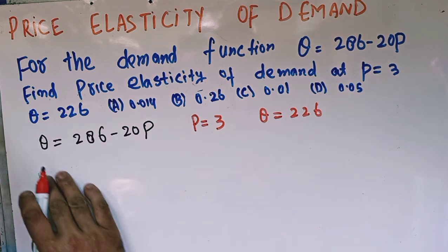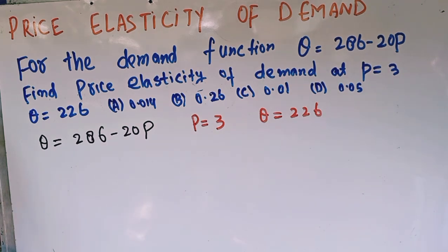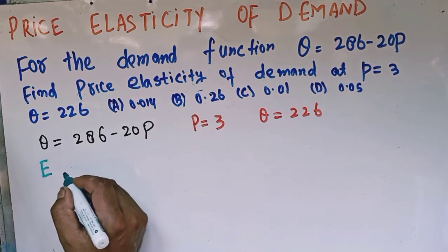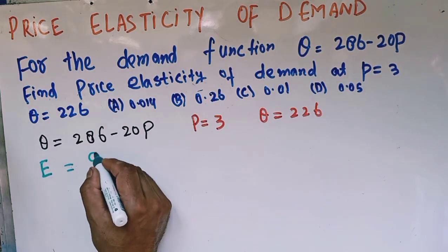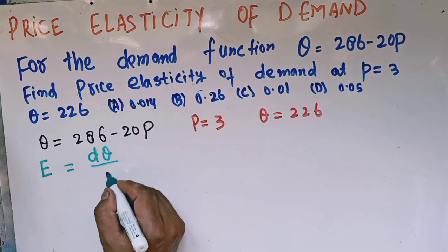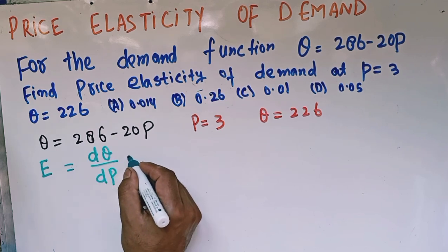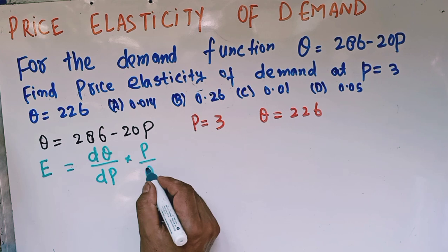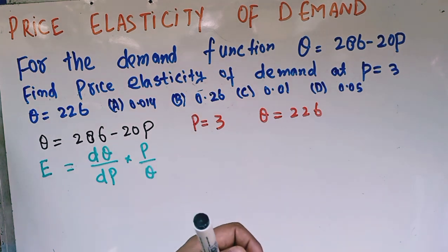Elasticity of demand is given by the formula: the derivative of the demand function with respect to price, times initial price, divided by initial quantity. That is dQ upon dP times P divided by Q.